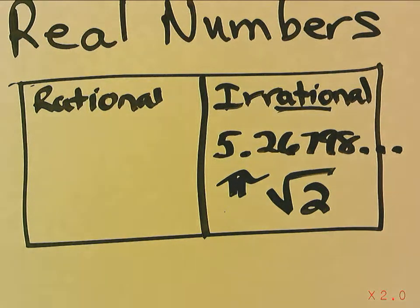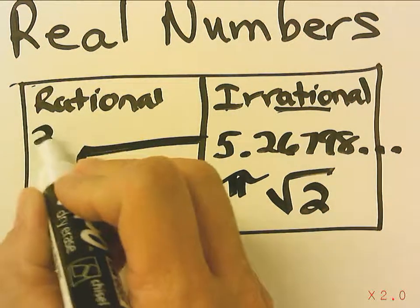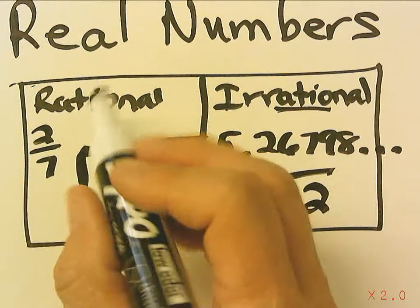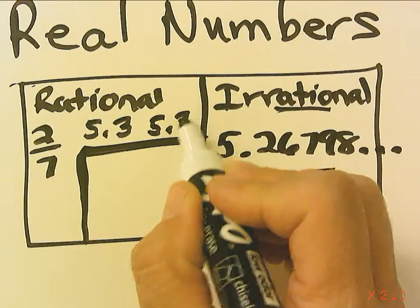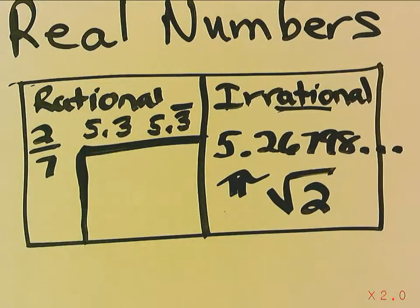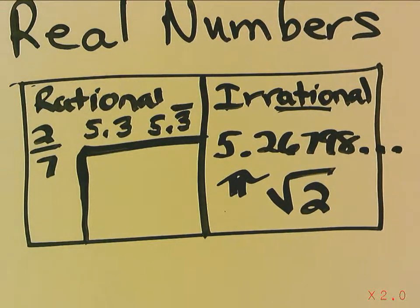Rational numbers are those that can be written as a fraction — they are terminating or repeating decimals. For example, 5.3 terminates and can be written as a fraction: 5 and 3 tenths, or 53 tenths. A repeating number like .3 is one third — it can be written as a fraction. If your decimals terminate or repeat, they are rational. If they do not terminate and do not repeat, they are irrational.